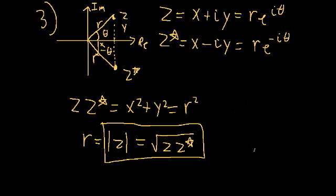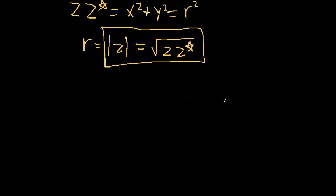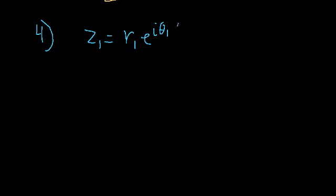We're just going to jump right into our last topic. And the fourth one is multiplying and dividing complex numbers. So let's say we have one complex number z1. We can say that this is equal to r1 e to the i theta 1. And let's say we have another complex number z2 is equal to r2 e to the i theta 2.